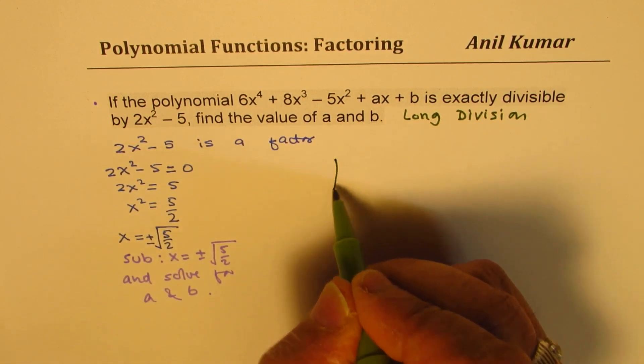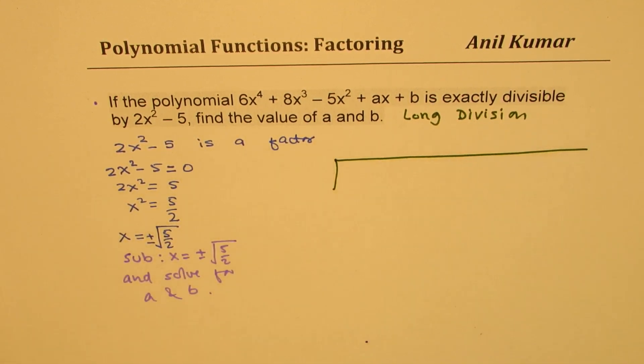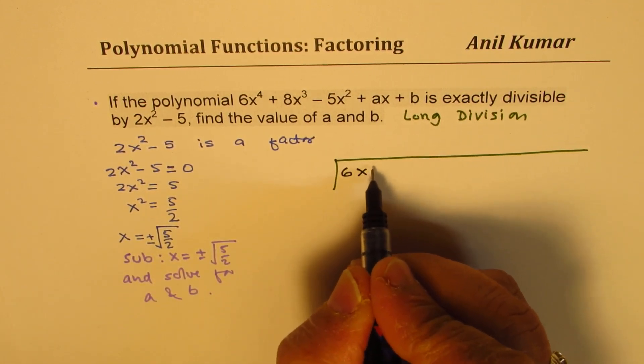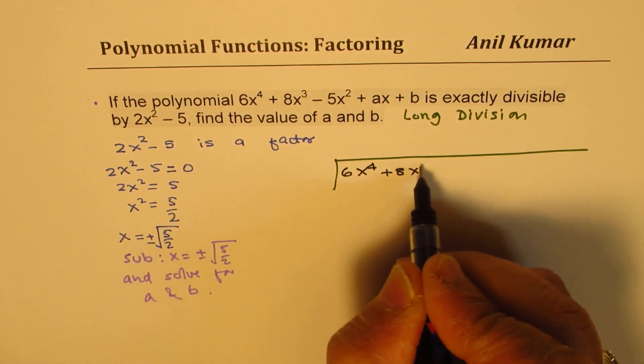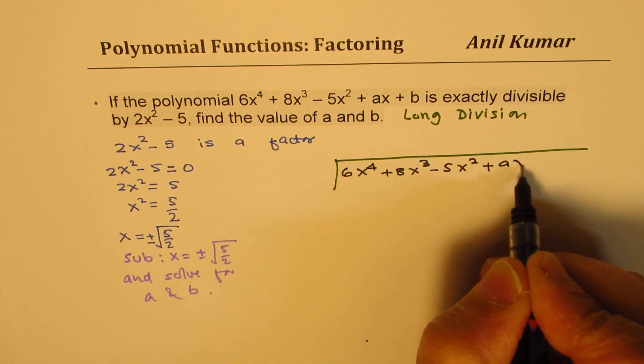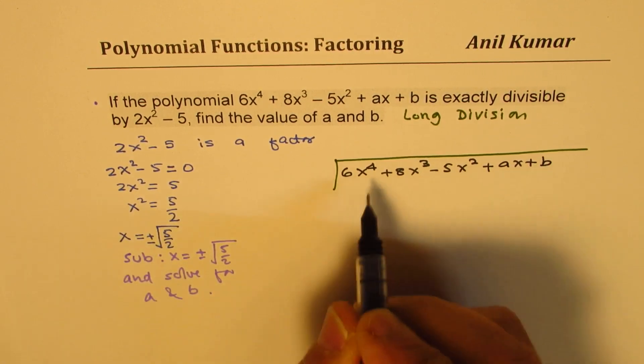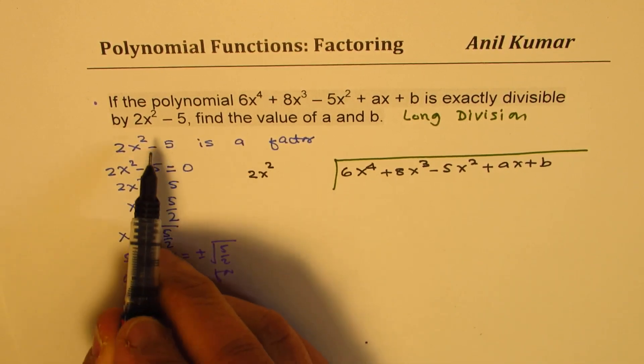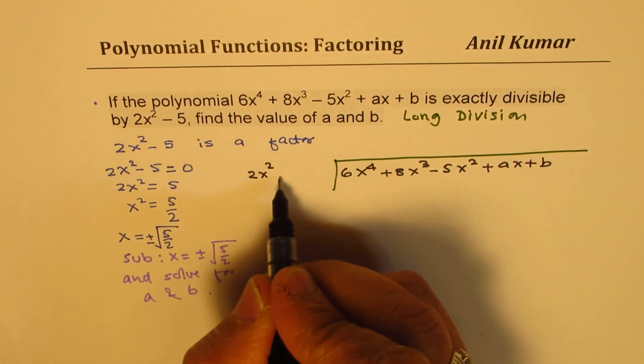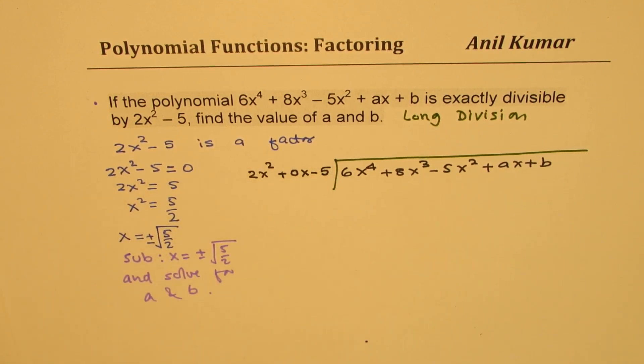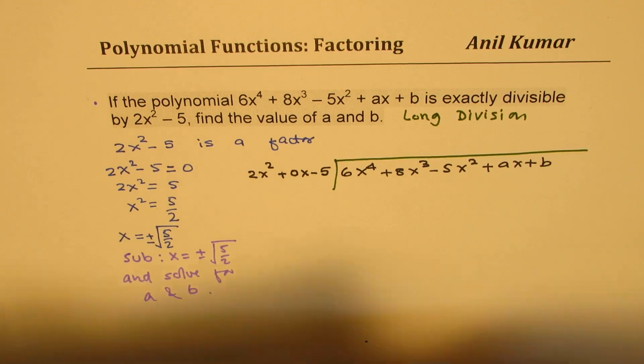We will divide the polynomial given to us by the given factor. The polynomial given to us is 6x to the power of 4 plus 8x cubed minus 5x squared plus ax plus b. We need to divide this by 2x squared minus 5.